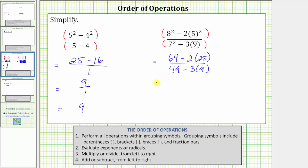Going back up to the numerator, we multiply before we subtract. Two times 25 equals 50. The numerator simplifies to 64 minus 50.